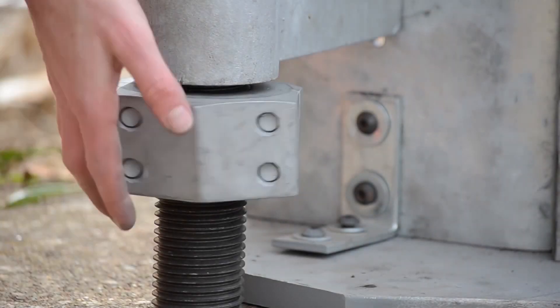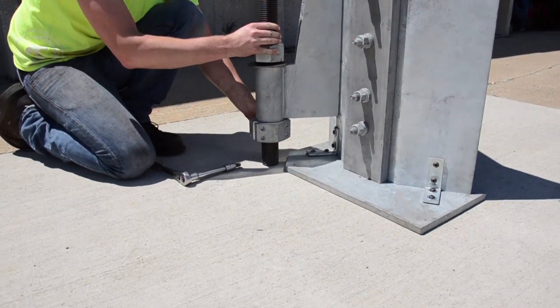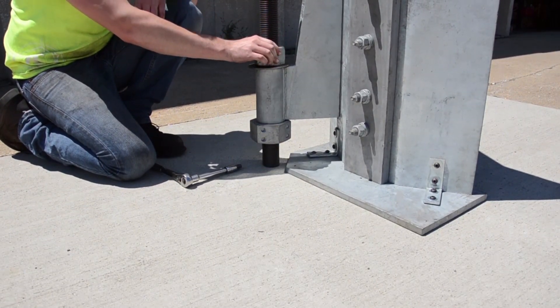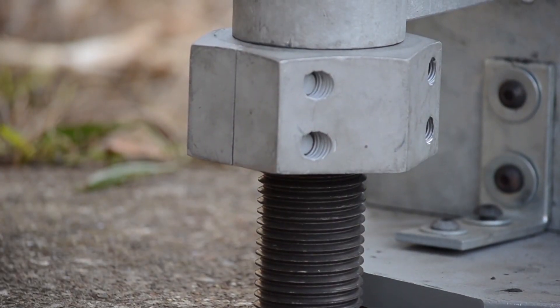Step 3: Tighten the split nut up to the base plate component. The final tension is achieved via tightening down the structural nut at the top of the base plate component. The application is now complete.